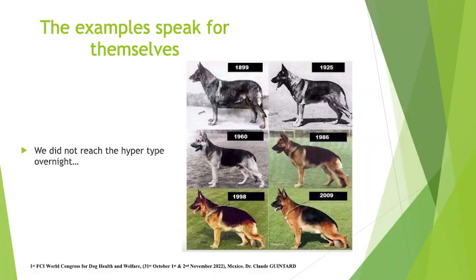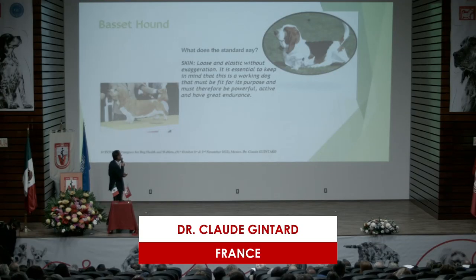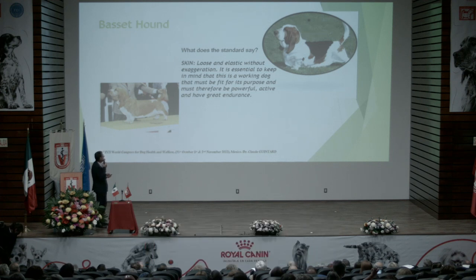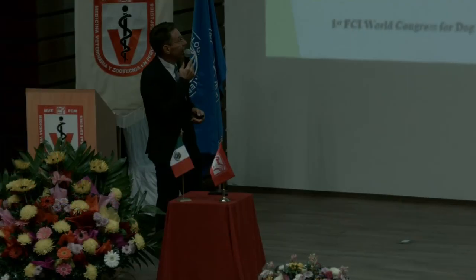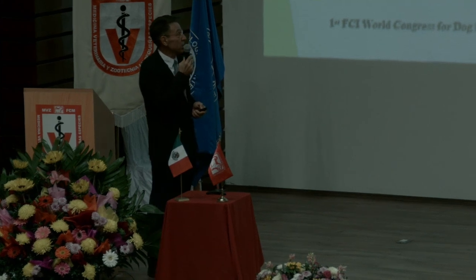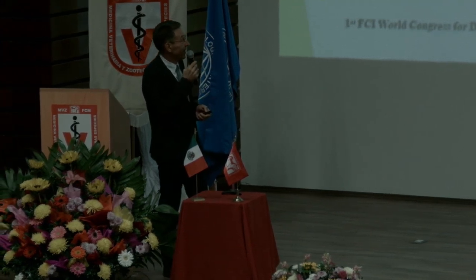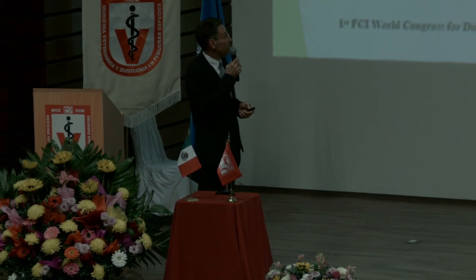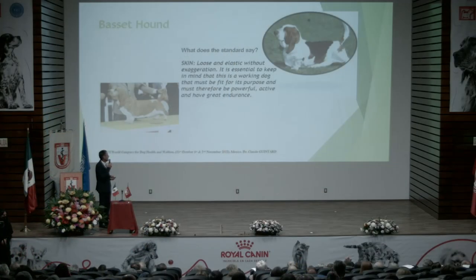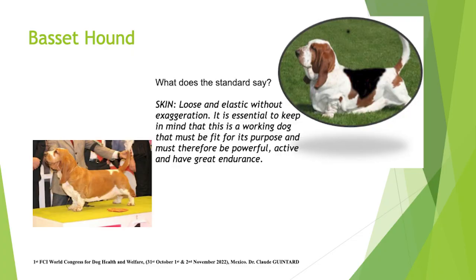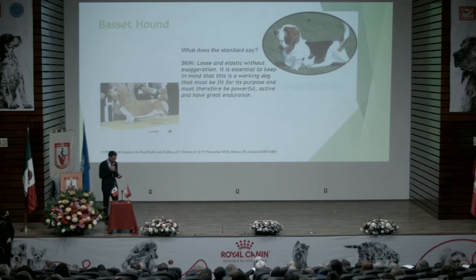What is very important to have in mind is that this did not appear overnight. You can see at the end of the 19th century and beginning of the 20th century animals which are not hypertypical. Since the end of the 1980s and more so after, you see these hypertypical animals clearly. In other breeds, for other morphological characteristics — what does the standard say in Basset Hounds? Skin loose and elastic without exaggeration. It is essential to keep in mind that this is a working dog that must be fit for purpose and must therefore be powerful, active, and of great endurance.